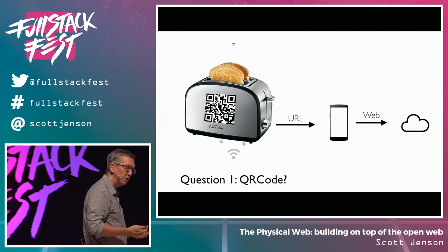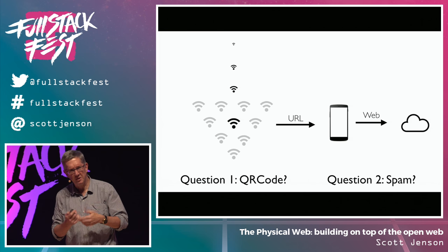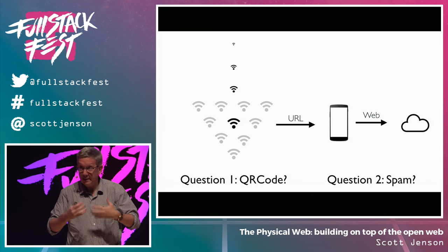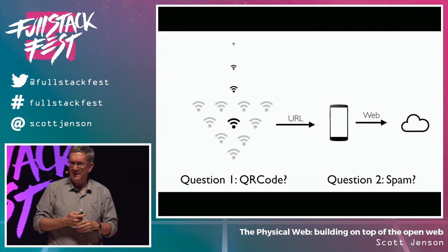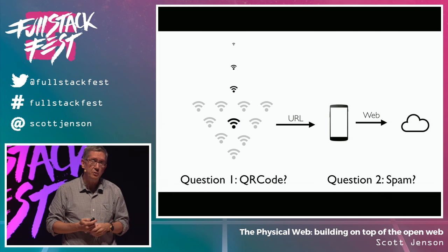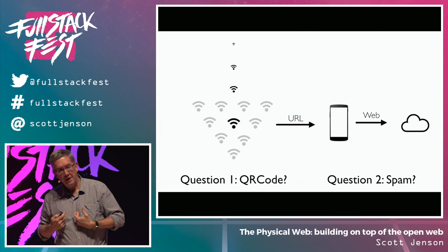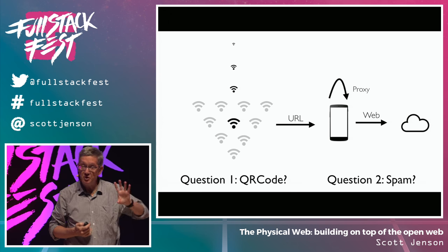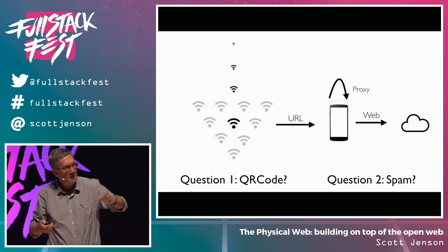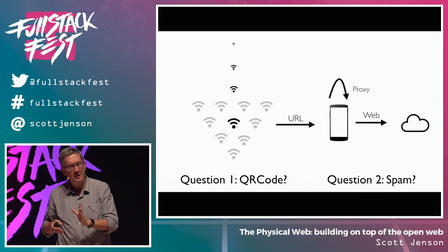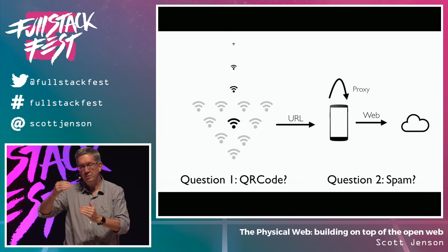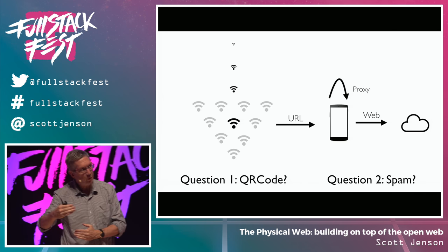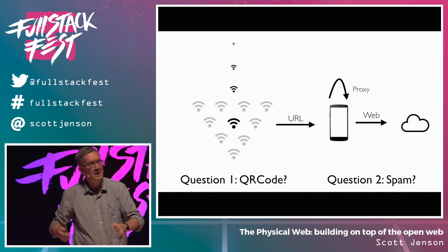The second question I get is: isn't this going to be spammy? There are two aspects — dangerously spammy like phishing, and just lots and lots of things. For the phishing concern, the browser will already protect you to a certain extent, and the scanner we wrote has a proxy that puts URLs through a spam filter. Opera's browser does the same thing with their own scanner. As far as handling lots and lots of devices, that's going to be a great problem to have — over time we'll rank by distance, then by preferences, then group into folders.